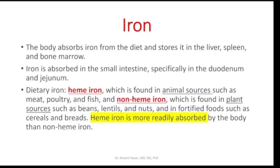As we know, our body absorbs iron from the diet and stores it in the liver, spleen, and bone marrow. Iron is absorbed in the small intestine, especially in the duodenum. Our body gets iron from heme sources, available in animal products, or non-heme sources available in plants. Heme iron is more readily absorbed by the body compared to non-heme iron.